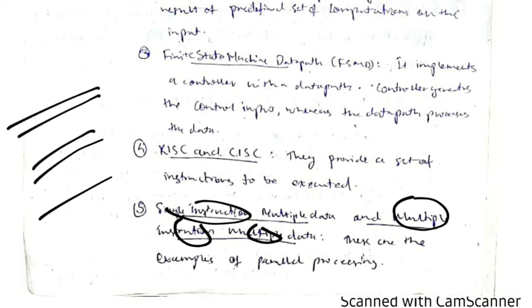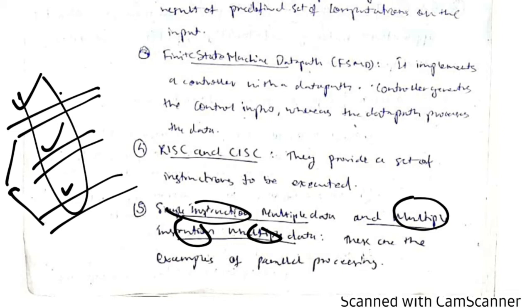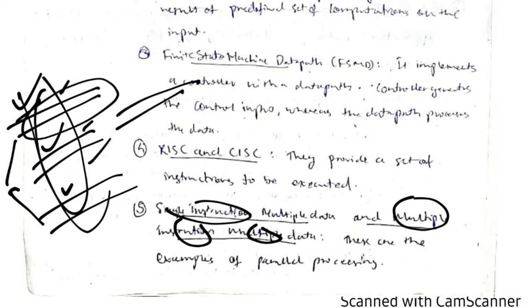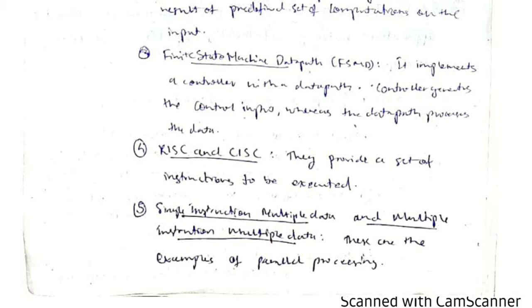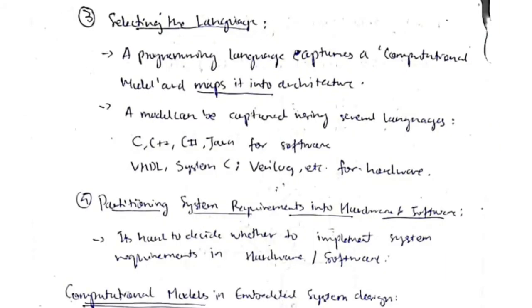The fifth architecture type is SIMD (Single Instruction Multiple Data) and MIMD (Multiple Instruction Multiple Data), which relate to pipelining. Pipelining means performing the same task in parallel — for example, simultaneously fetching data, executing, and performing other independent tasks. This saves a significant amount of time instead of waiting for one task to finish before starting the next.